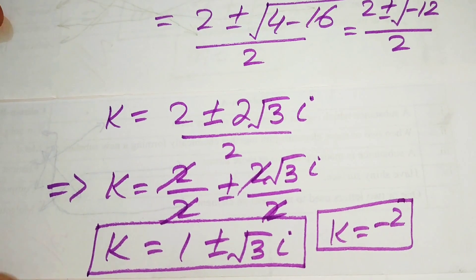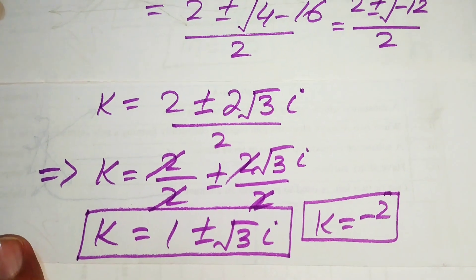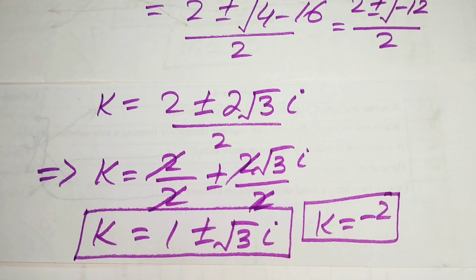These are the 3 roots from equation 2, and we got 3 roots from equation 1, giving us a total of 6 roots of the given equation. This is the final answer. Thank you so much for watching this video — please subscribe to my channel for more exciting videos.